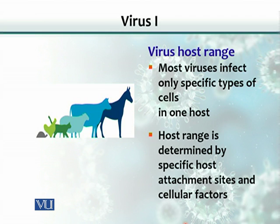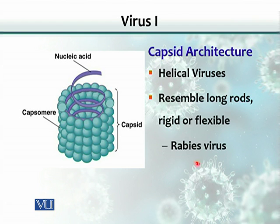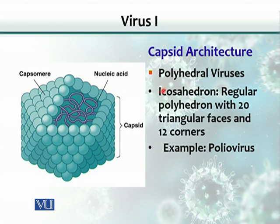Similarly, some viruses are specific to certain animals — some are human-specific, some are dog-specific, some are cat-specific — and the reason is essentially the receptor. Based on the capsid architecture, we can categorize viruses into various groups. The helical virus is a rod-shaped or elongated structure where the nucleic acid is spiral in shape, and around this spiral nucleic acid, capsomeres are laid, covering it in a long hollow tube-like structure. Rabies virus is an example of a helical virus.